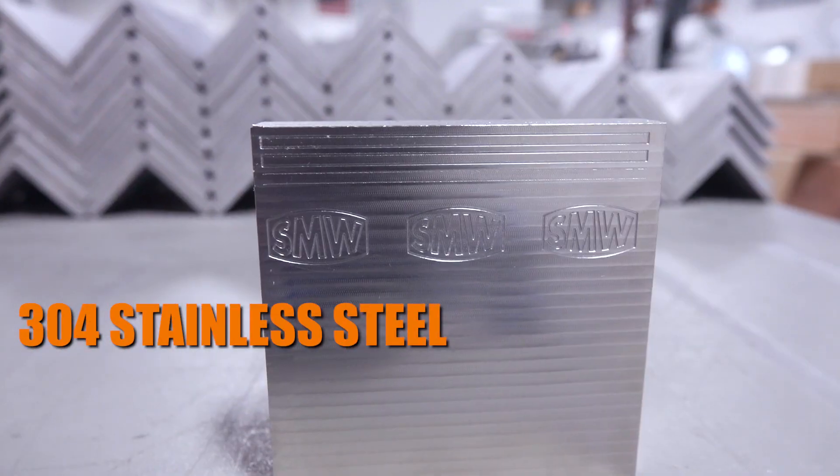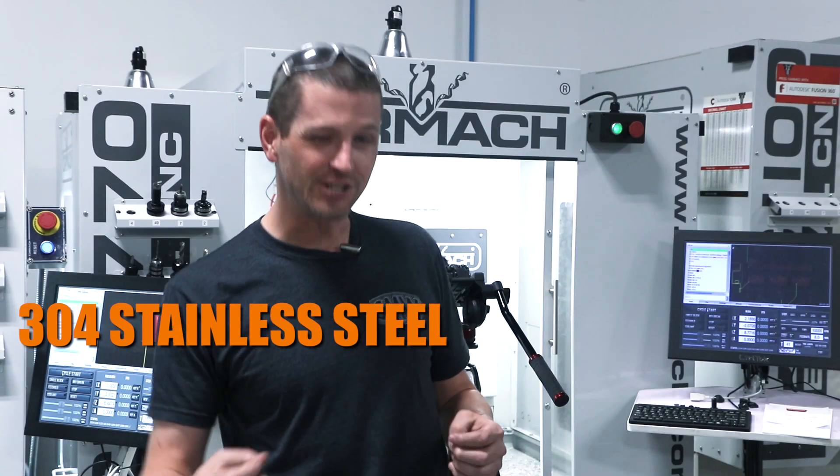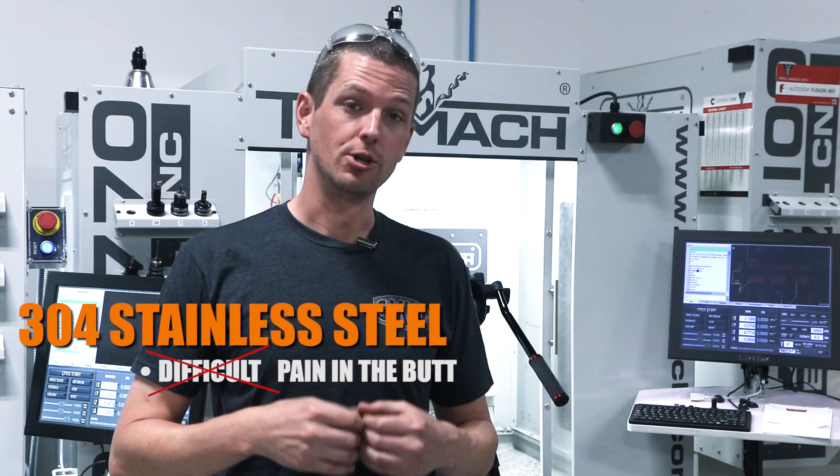Hi folks. 304 stainless steel has a reputation as being a more difficult material to machine.